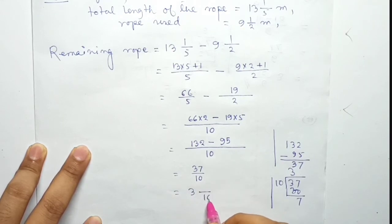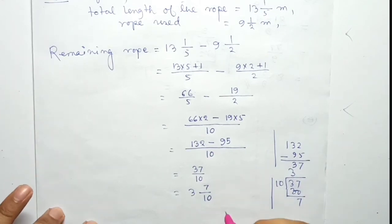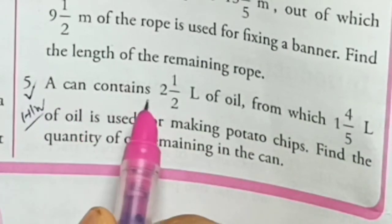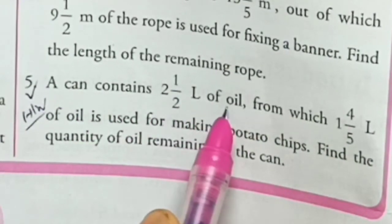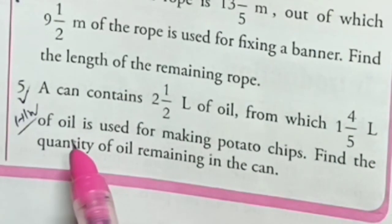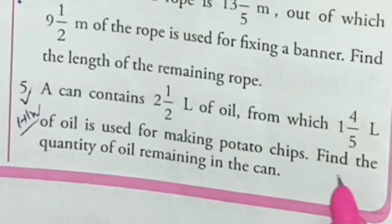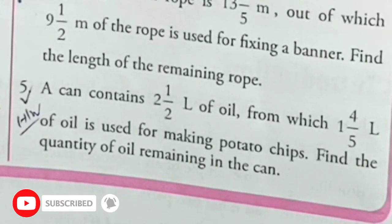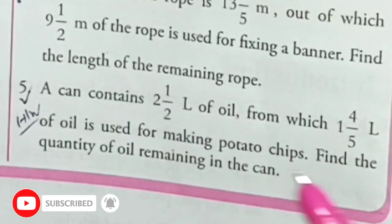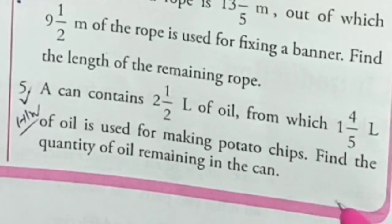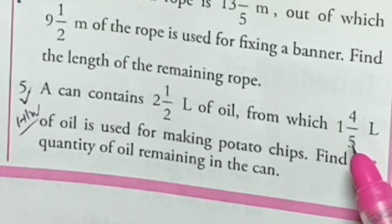Question number five: A can contains 2 and 1/2 liter of oil, from which 1 and 4/5 liter of oil is used for making potato chips. Find the quantity of oil remaining in the can.